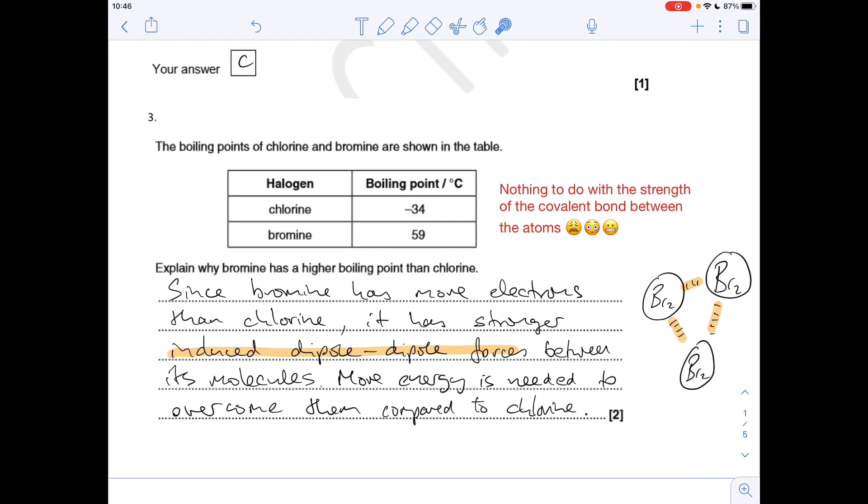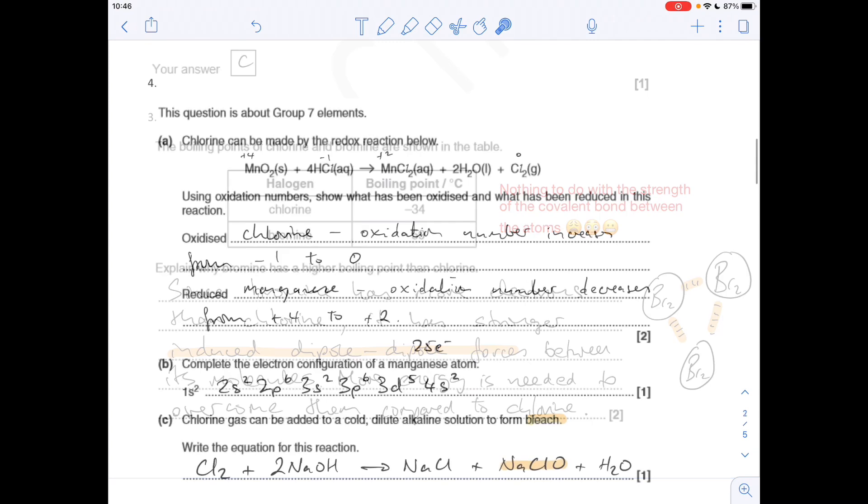In a sample of bromine you've got individual bromine molecules connected or attracted to each other by these very weak induced dipole intermolecular forces, and the strength of these is linked to the number of electrons in the molecule. Chlorine would be a similar diagram to that. Why is bromine's boiling point higher? Bromine's got more electrons than chlorine, it's got stronger induced dipole-dipole forces between the molecules, and so more energy is needed to overcome them compared to chlorines.